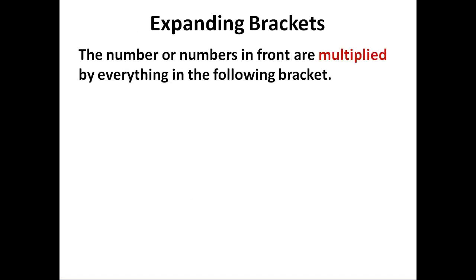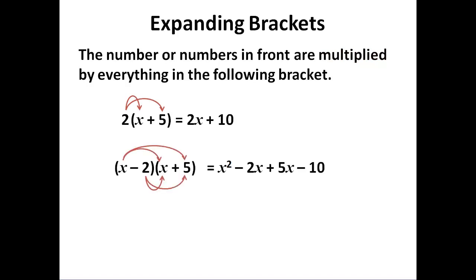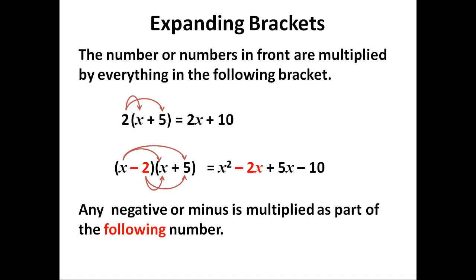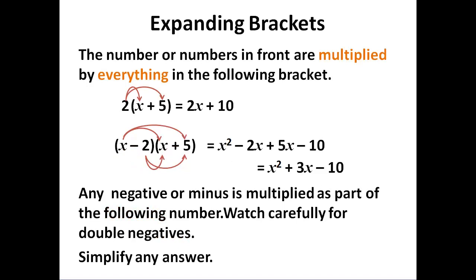So this is what we need to do. The number or numbers in front are multiplied by everything in the following bracket, whether it's simple or quadratic. Negatives or minuses are multiplied as part of the following number. The minus 2 here goes with the minus and the minus 10. We need to simplify any answer. The middle terms must be simplified.